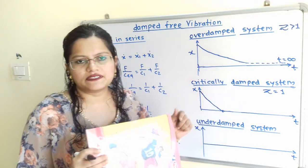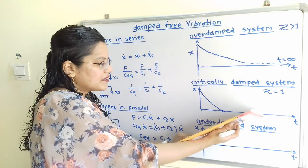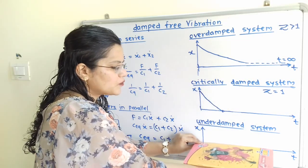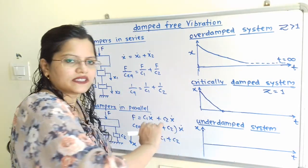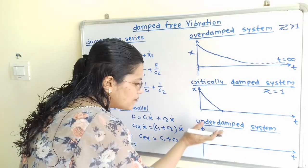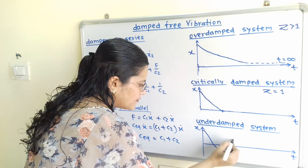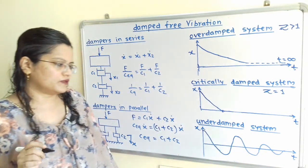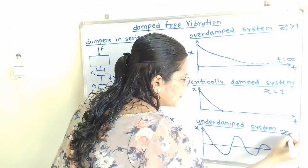For the under-damped system (ζ < 1), giving an initial displacement causes the door to oscillate on both sides of the mean position, with the amplitude gradually decreasing until it finally comes to rest at the mean position. The diagram shows oscillatory motion that decays over time.